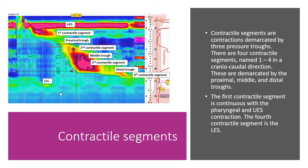The first contractile segment is continuous with the pharyngeal and upper esophageal contraction. The fourth contractile segment is the lower esophageal sphincter.